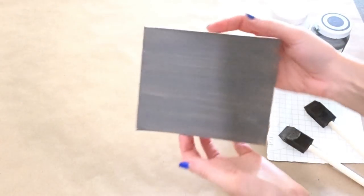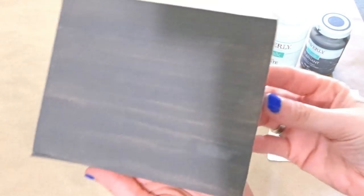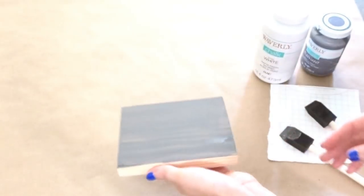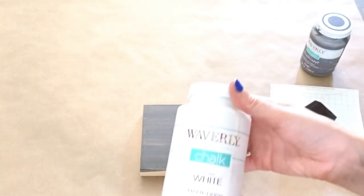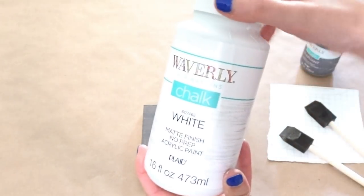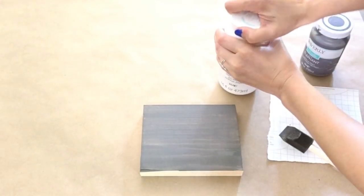So here is the board all dry now. You can see, you can kind of see through the paint, but that is no big deal. One coat is just plenty. So now I'm going to take my white chalk paint and just sort of dry brush it on.